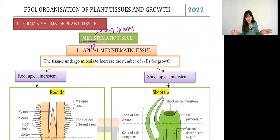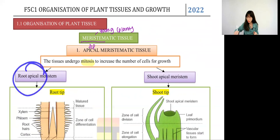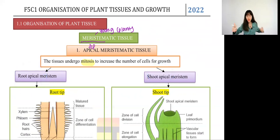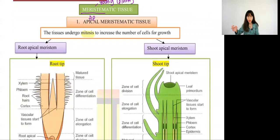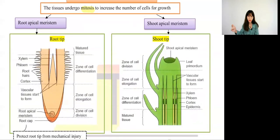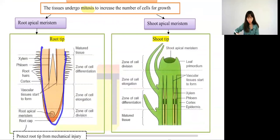Apical means tip, so we have root tip and shoot tip as written in the notes. How do we differentiate them? It's very easy. Root tip looks like — if you don't know, go to the school field, pull some grass, and you can see how your root looks.